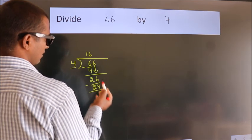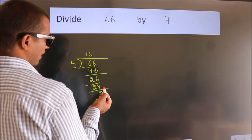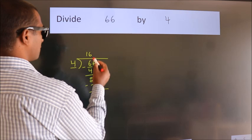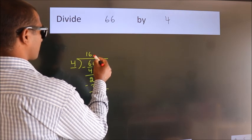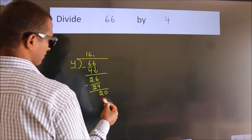After this, no more numbers to bring down. So, what we do is we put a decimal point, take 0. So, 20.